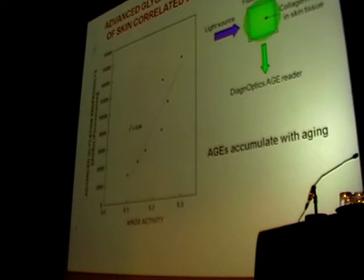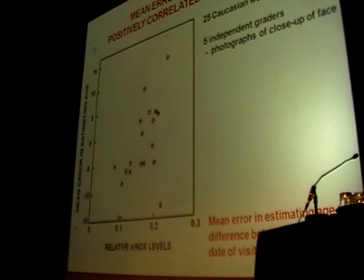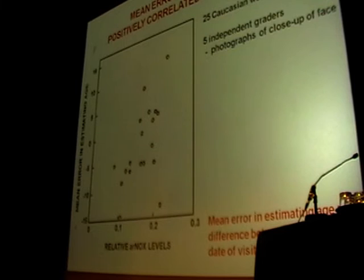Linear correlations between the AGEs and ARNOX suggest a causal relationship. Again, looking at skin, we see that five independent graders looked at close-up photographs of the face of 25 Caucasian women, 45 years of age. And these were taken at baseline visit and then they estimated each subject's age.